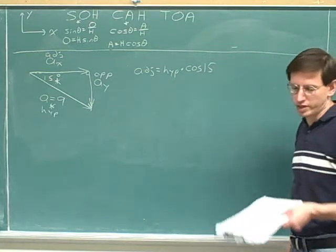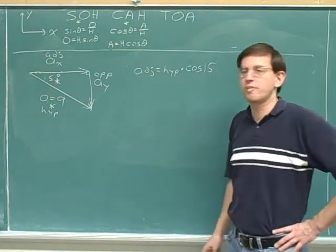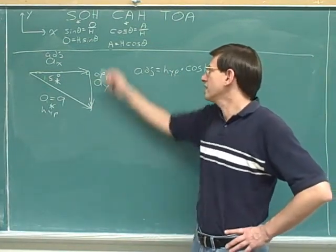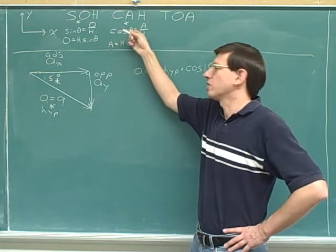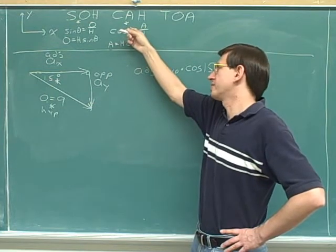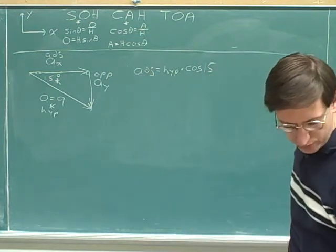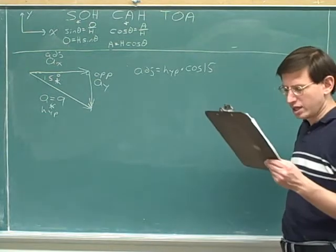Remember that if you're ever in any doubt about this equation, you can just go back to first principles. You can just say cosine equals adjacent over hypotenuse. And if you do a little algebra and rearrange, you would get this equation over here.